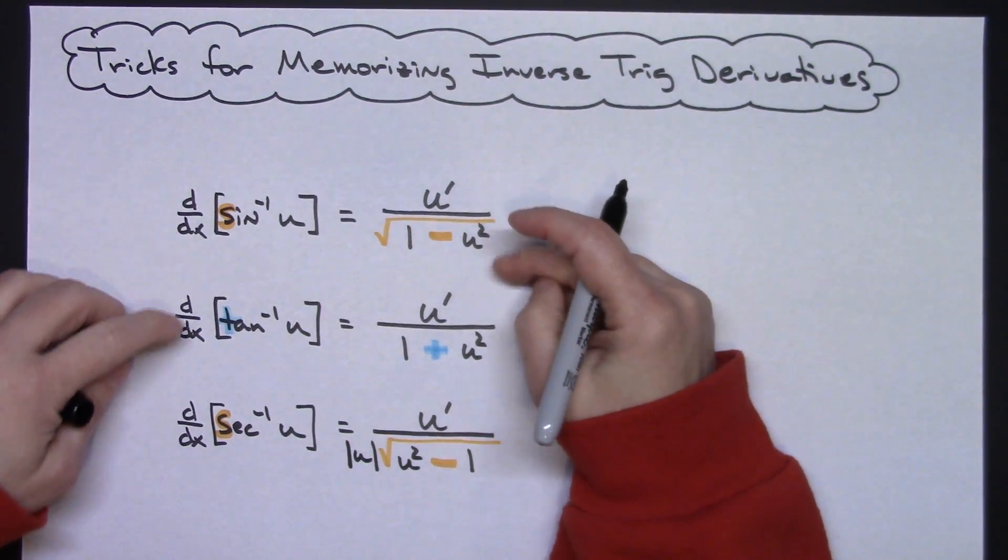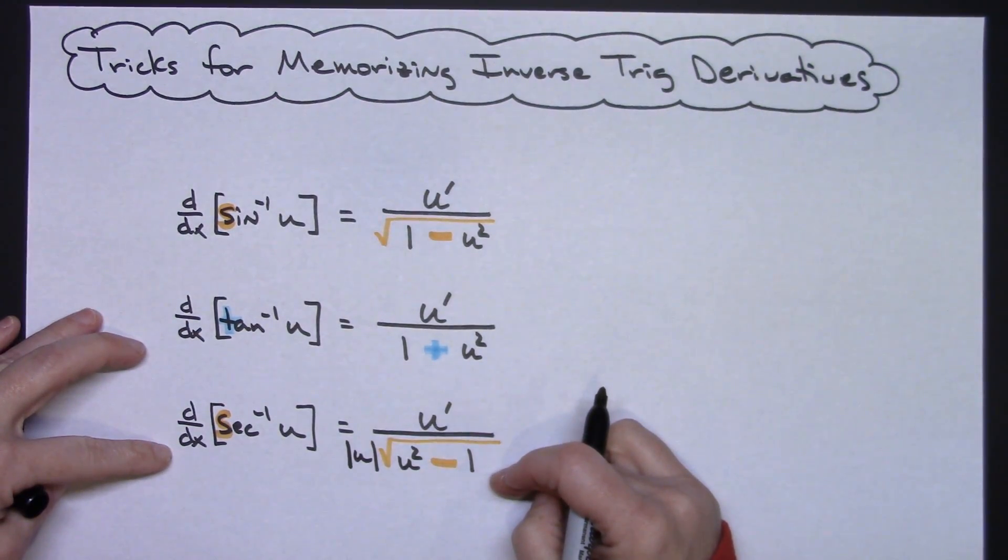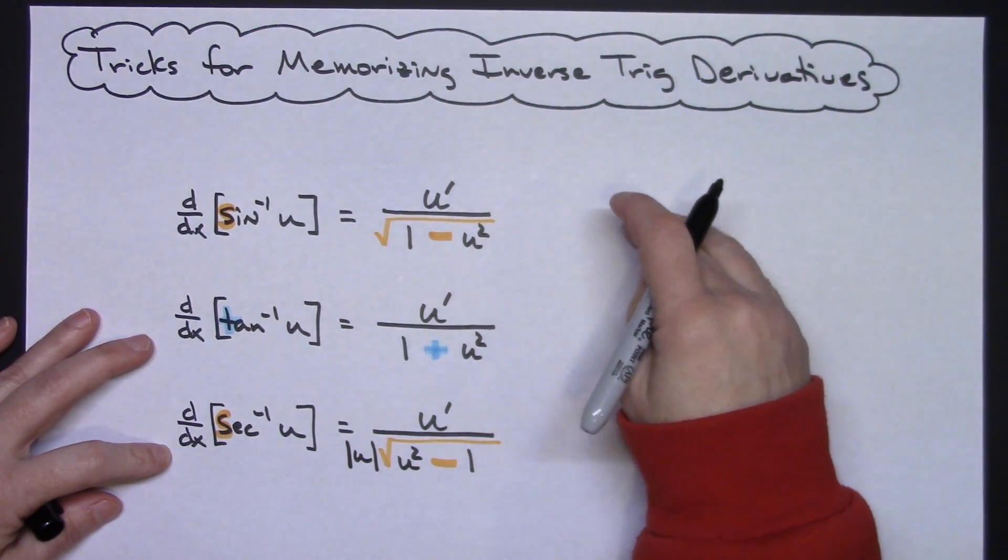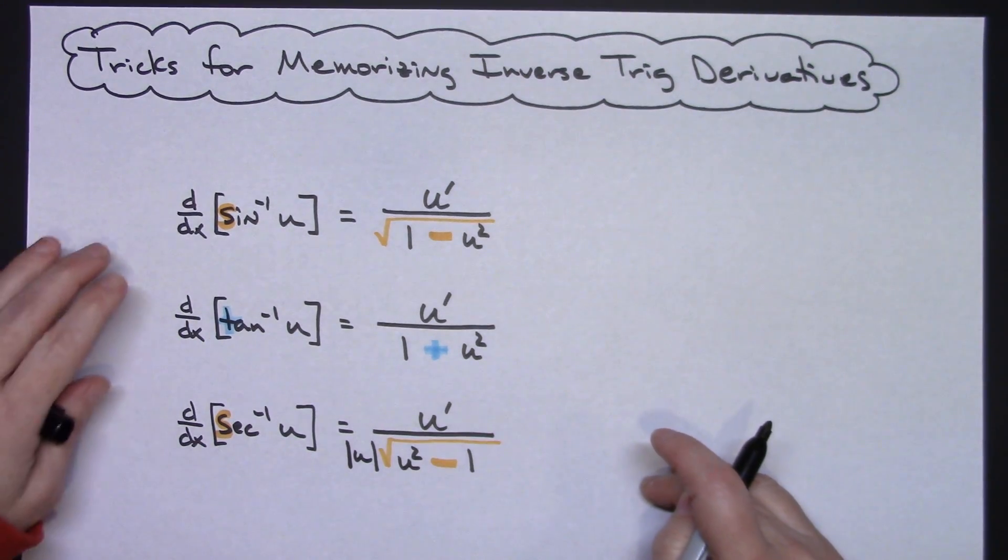Now there's your tricks and your mnemonics for how you're going to get all your little symbols and your square roots in what you need there. Now that's all you need to memorize, besides the fact that you've got three more to write over here, but there's no memorizing.